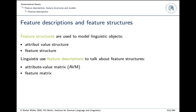Alternative names for feature structures are attribute-value structures. For the feature descriptions we have attribute-value matrix, or feature matrix. AVM is a common abbreviation.